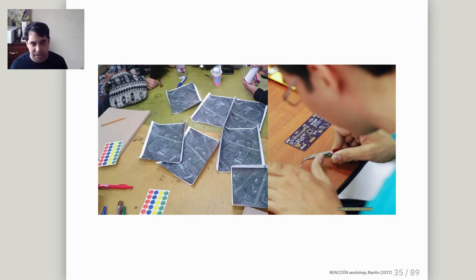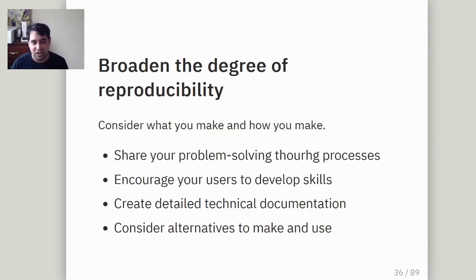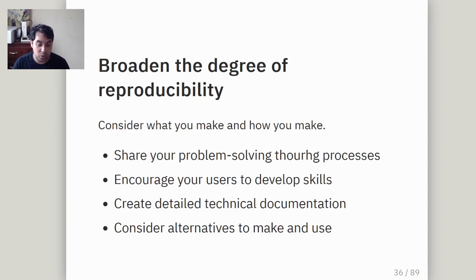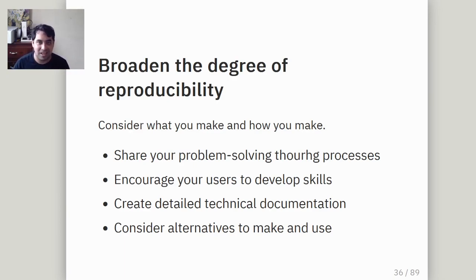To broaden the degree of reproducibility, consider sharing your problem-solving process: what were you thinking, and what decisions led you to create what you created? Encourage others to develop the skills—create technical documentation so people can see it, follow the steps, and consider some alternatives to making and using. Think about people who do not have the same materials or access to the same machines. You want to give them the ability to think of alternatives—maybe it's not something you can think of because you're not in their space, but you're giving them the tools so they can start thinking, enabling the solving of a problem.